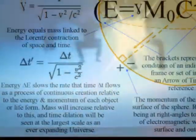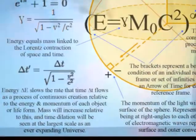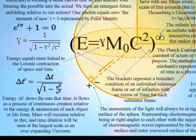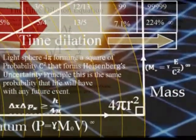Photon energy slows the rate that time flows as a process of continuous creation relative to the energy and momentum of each object or life form. Mass will increase relative to this.